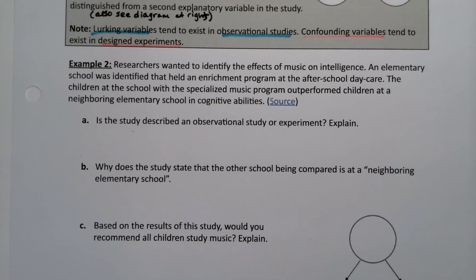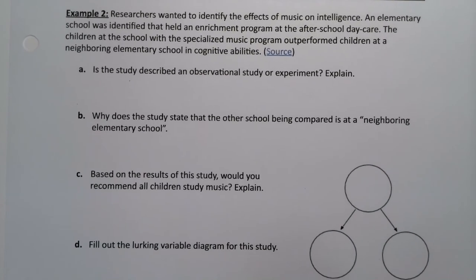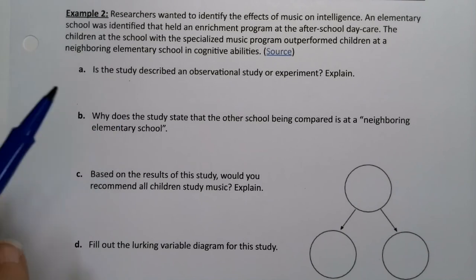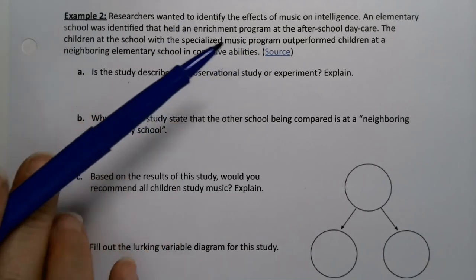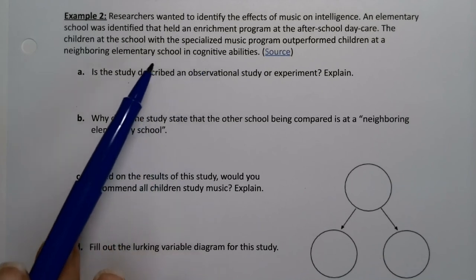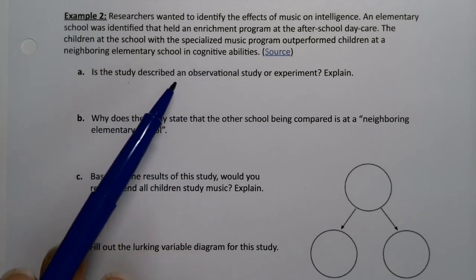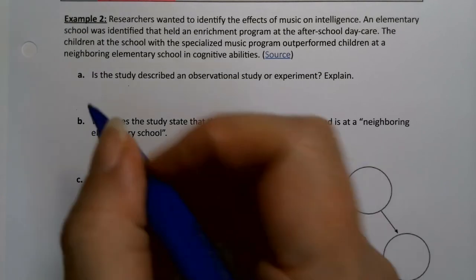Researchers wanted to identify the effects of music on intelligence. An elementary school was identified that held an enrichment program at the after-school daycare. The children at the school with a specialized music program outperformed children in a neighboring elementary school in cognitive abilities. Is the study described an observational study or an experiment? Well, the researchers identified the children at the school with a specialized program — they did not put the people into these programs. The students were already in these programs and already at these schools. So this is an observational study.